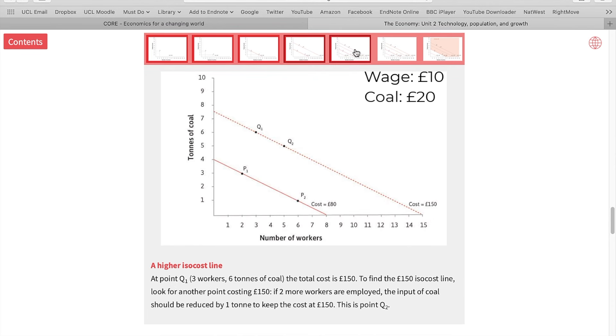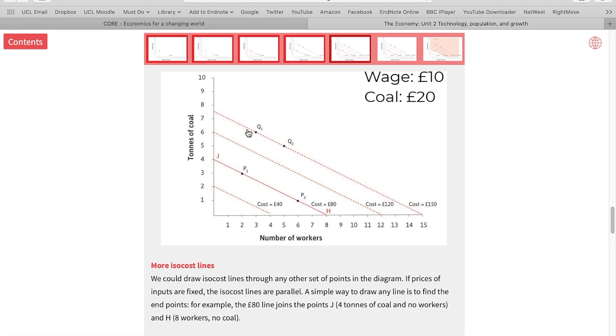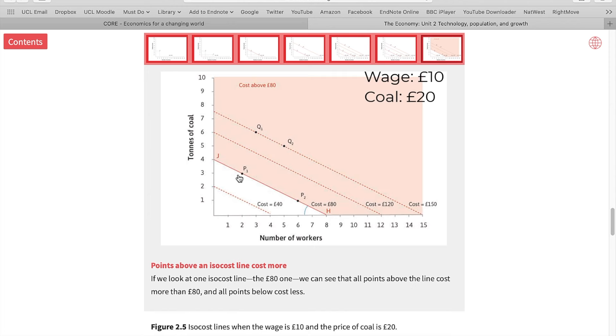Let's add more isocost lines. This line is for 120 pounds. This one is for 40 pounds. As you can see, anything to the right of this line costs more than 80 pounds. Anything on the left costs less than that. So, as a firm, we would like to choose technologies that are at the lowest cost curves.